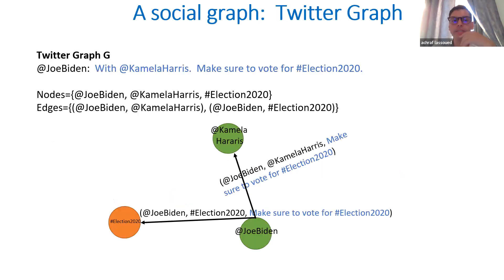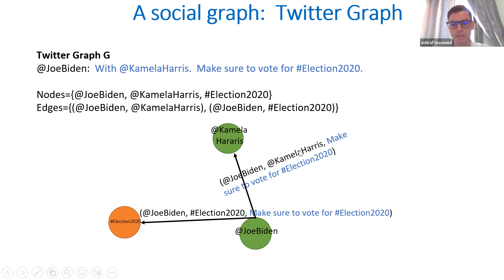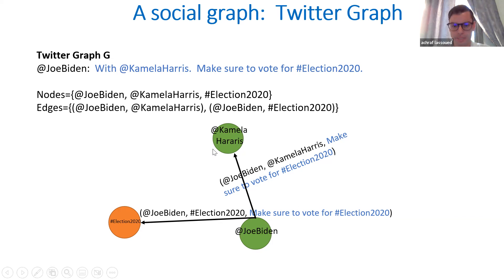Let's begin with the Twitter graph. We start with the social graph, for example Twitter. In a social graph, imagine we have a tweet sent by Joe Biden. The content is shown in blue. The nodes are hashtags, and we have two edges from the author to each of the tags.